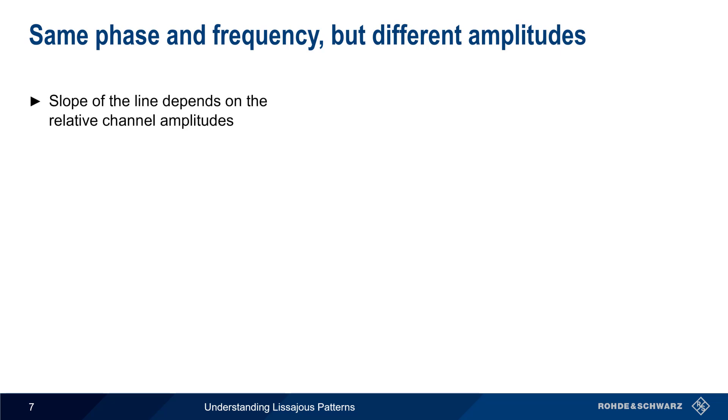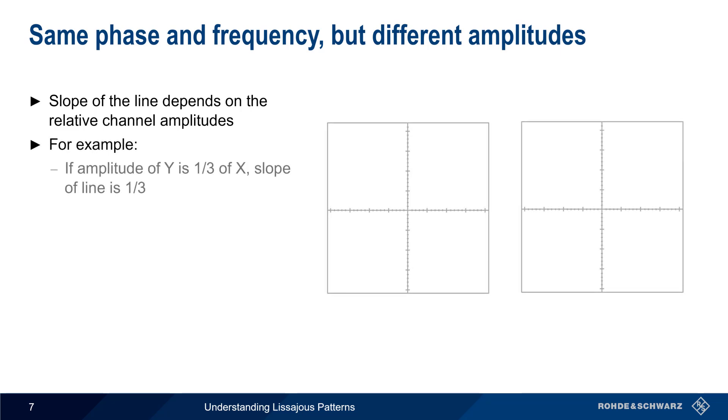The slope of the straight line depends on the relative amplitudes of the two channels. For example, if the amplitude of the Y channel is one-third the amplitude of the X channel, then the slope of the line will be one-third. On the other hand, if the amplitude of the Y channel is three times the amplitude of the X channel, then the slope will be three.